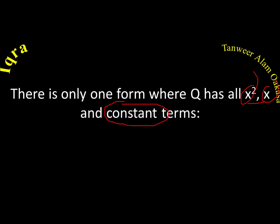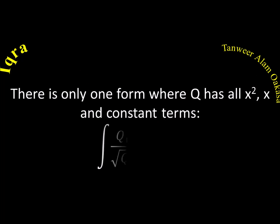We start with the particular form: integration of Q1 upon square root of Q2, where Q1 is one quadratic and Q2 is another quadratic.